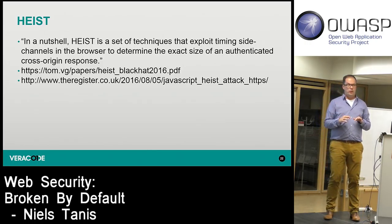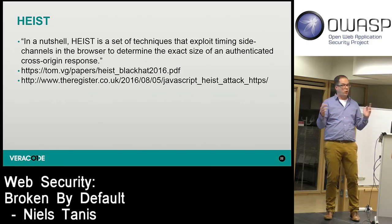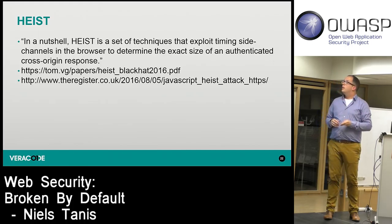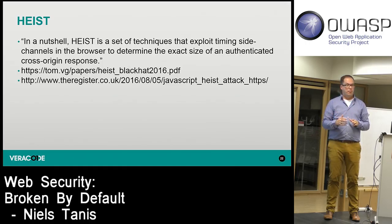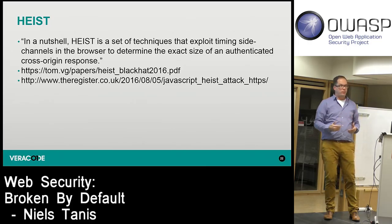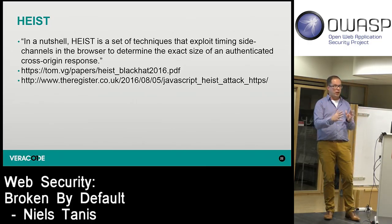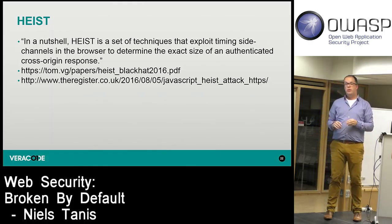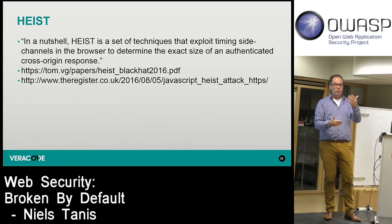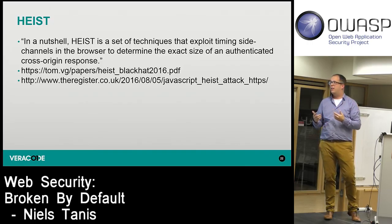For Black Hat US he introduced HEIST — doing essentially the same thing but over TLS encrypted channels. He only cares about the size of the data, not its contents. He found a way to determine the exact size of a resource from TCP window sizes. Most servers apply gzip compression, which reduces page size — and when an input variable appears in the output, it gets deduplicated, reducing the size further.